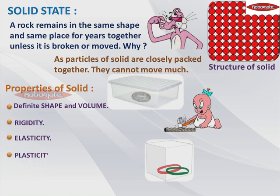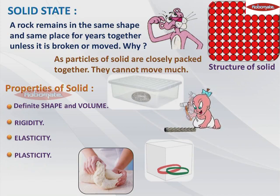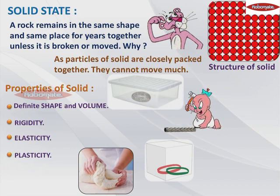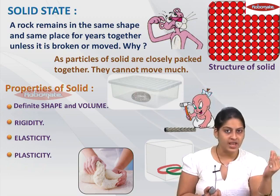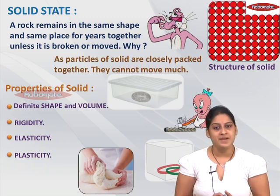There is one more property of solids which is known as plasticity. Some solids do change their shape when external pressure is applied, but when you remove the external pressure, they do not regain their original shape. This property is known as plasticity. A very good example is dough and clay. When you put pressure on clay, it does change its shape, but when you remove your hand, it does not go back to its original shape. So this property is known as plasticity.